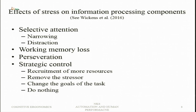Another strategy is to change the goals of the task — set simpler goals or sub-goals, try to achieve those sub-goals with a lower level of arousal, and then keep adding goals so that arousal gradually decreases. Finally, do nothing — while not a good strategy in general, under very severe conditions when an individual is highly stressed, the best strategy may be to do nothing for a time and return to the situation when the level of arousal subsides.